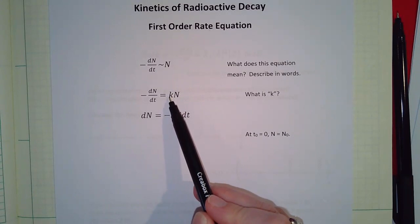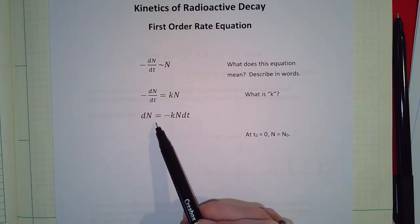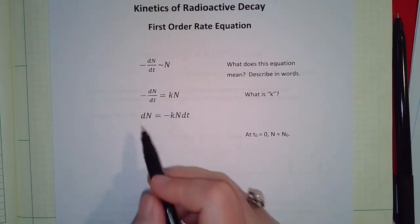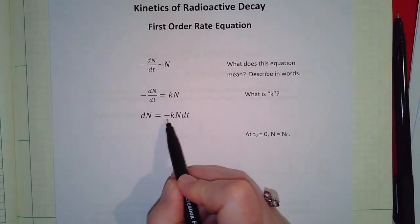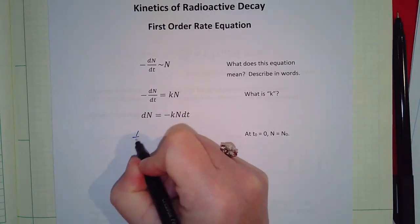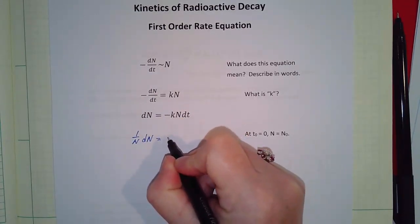So now we can start to separate these variables and then we're going to integrate. So here we've got dN equals minus kN dt. So we just need to bring that N over: one over N dN equals minus k dt.